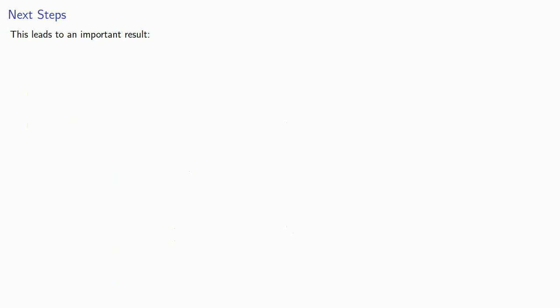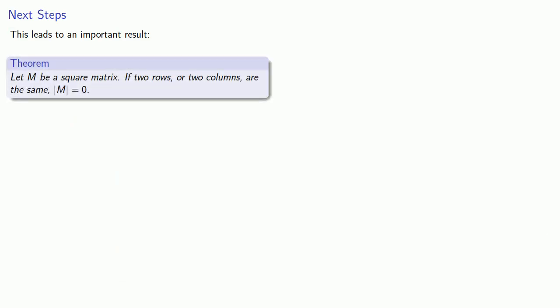This can be generalized and leads to an important result. Let M be a square matrix. If two rows or two columns are the same, the determinant of M is equal to 0. But what if the rows and columns are different? We'll take a look at that next time.